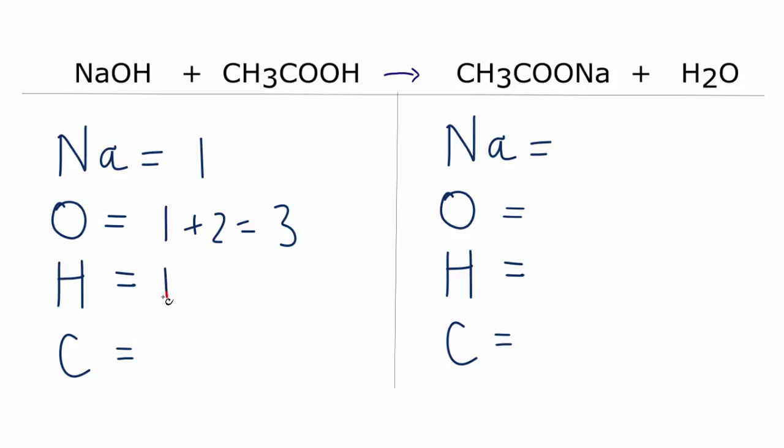Hydrogens, we have 1. But now we have this 3 here. And don't forget the H here for a total of 5 hydrogens. And carbons, we have 1 and the 1 in the middle here. So we have 2 carbon atoms.